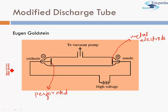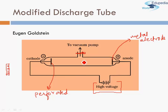He used a cathode with holes in it — minute holes through which particles can pass through. Just as we observed something new when we used a perforated anode that led to the discovery of a new particle, Goldstein tried using a perforated cathode. The rest of the setup was completely similar: a high voltage source applying 10,000 to 20,000 volts, a vacuum pump to evacuate the gas inside, and metal electrodes with an electric field present.